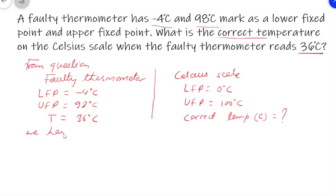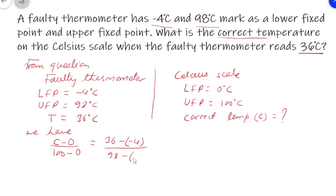We use the relation: (reading in Celsius scale minus lower fixed point) divided by (upper fixed point minus lower fixed point) equals the same ratio for the faulty thermometer. This gives us C/100 = (36 - (-4)) / (98 - (-4)), which simplifies to C/100 = 40/102.